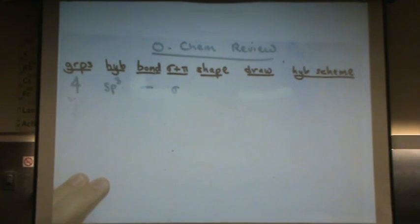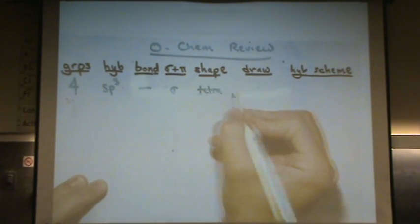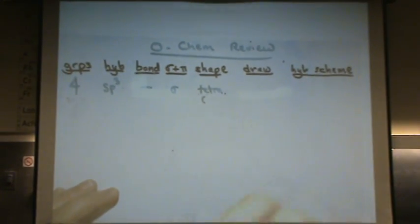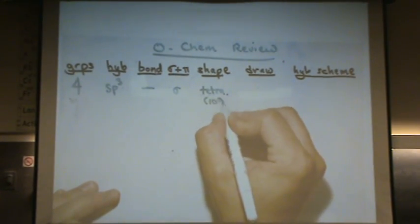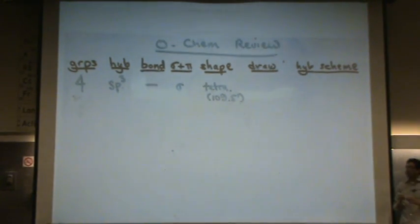What's the shape? It's tetrahedral. So that means it looks like a tetrahedron shape and it's 109.5 degree bond angles, or what's called the ideal bond angle. It might not be that exact bond angle, but those are the ideal mathematical angles.